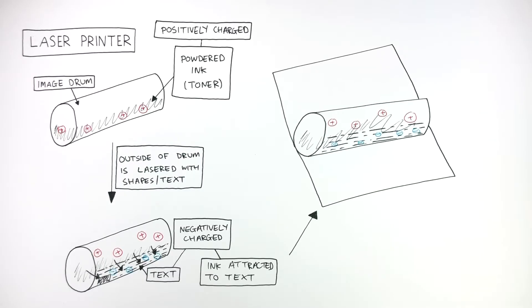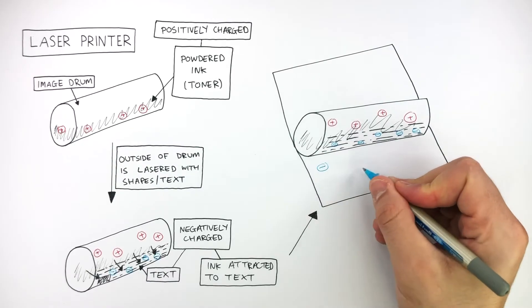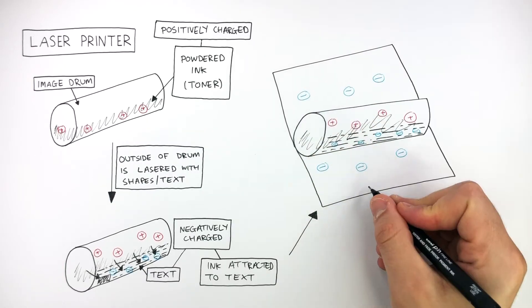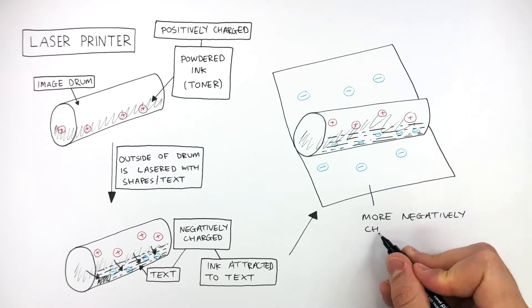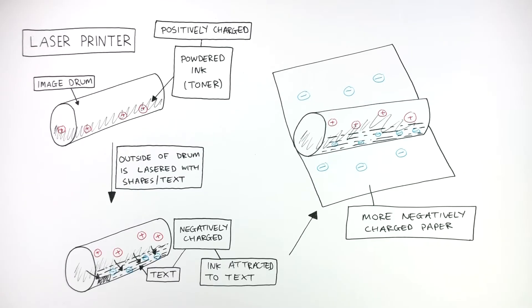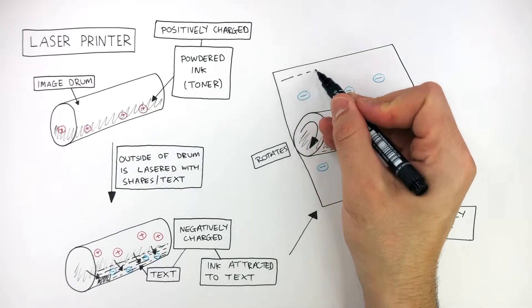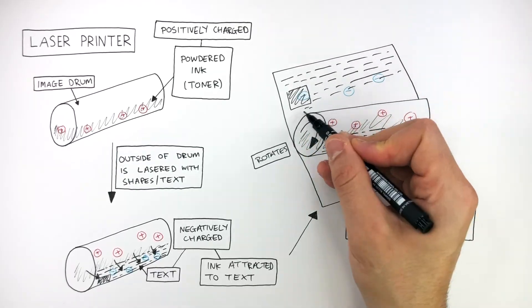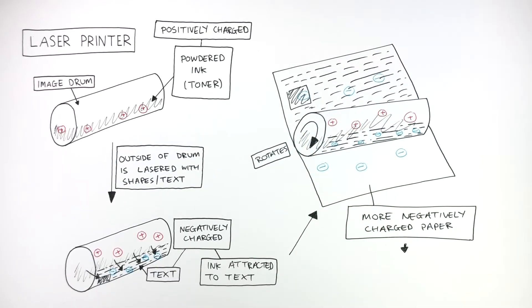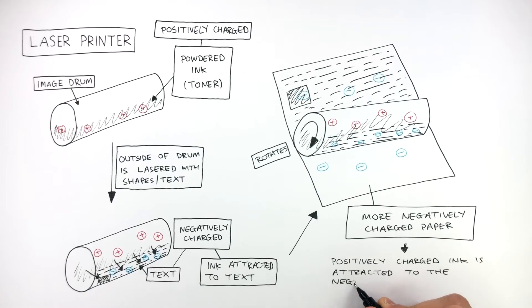The next stage is for the image drum to roll over the paper for printing to take place. The paper is more negatively charged than the outside of the image drum. Therefore, as the image drum rotates over the paper, the positively charged powdered ink sticks to the paper, since the paper is more negatively charged than the drum.